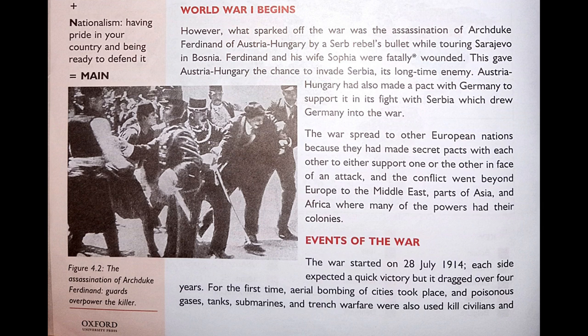This gave Austria-Hungary the chance to invade Serbia, its long-term enemy. Austria-Hungary had also made a pact with Germany to support it in its fight with Serbia, which drew Germany into the war. The war spread to other European nations because they had made secret pacts with each other to either support one or the other in the face of an attack.